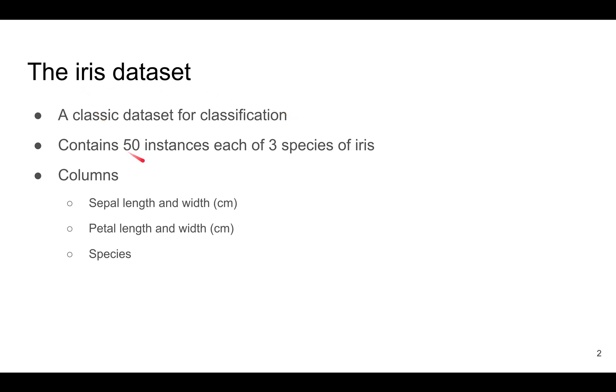This dataset contains 50 instances each of three species of iris, and there are four columns: sepal length, sepal width, petal length, petal width, as well as a fifth column which is the species.